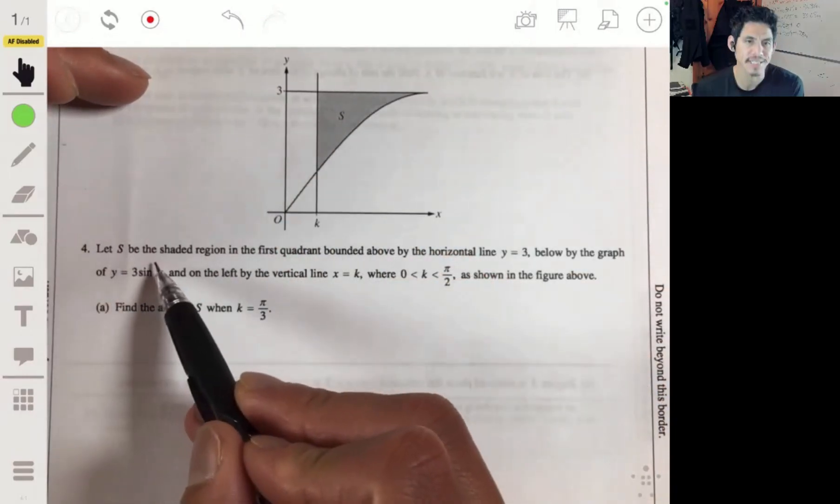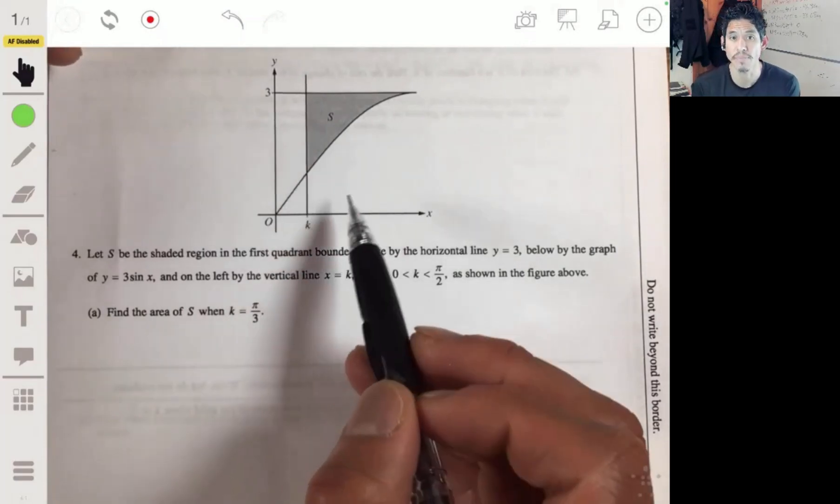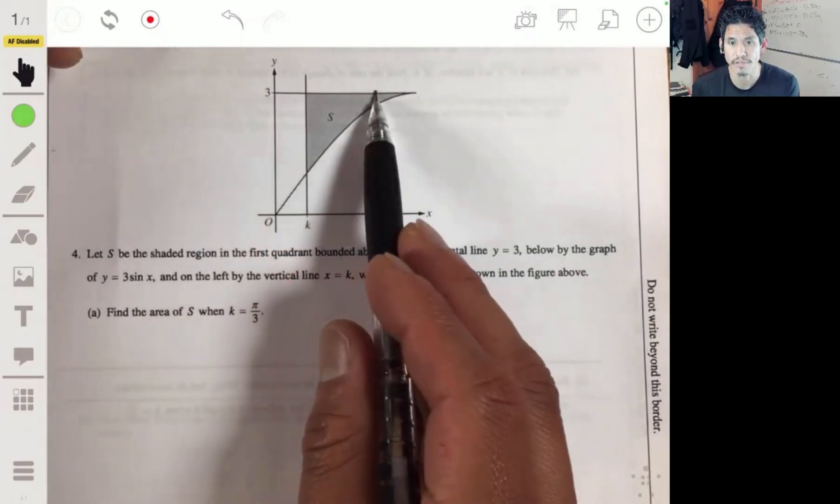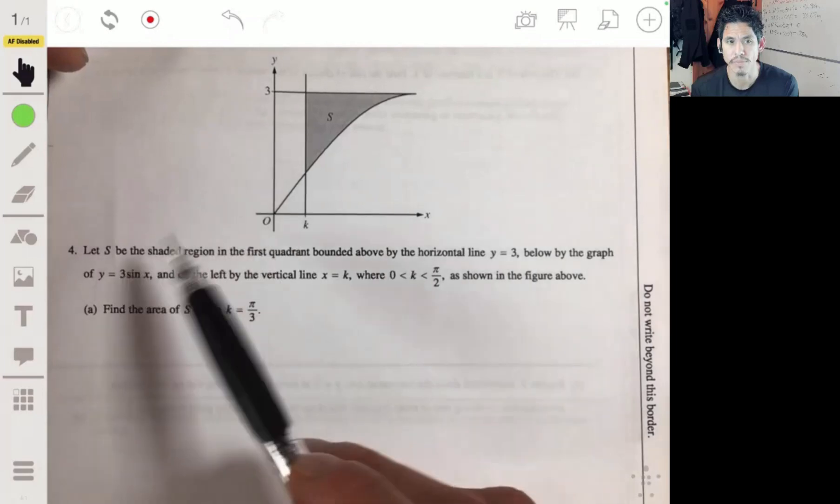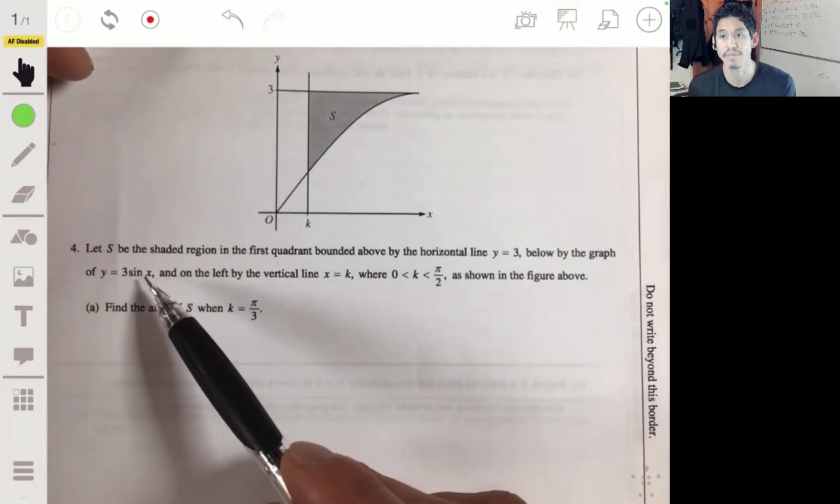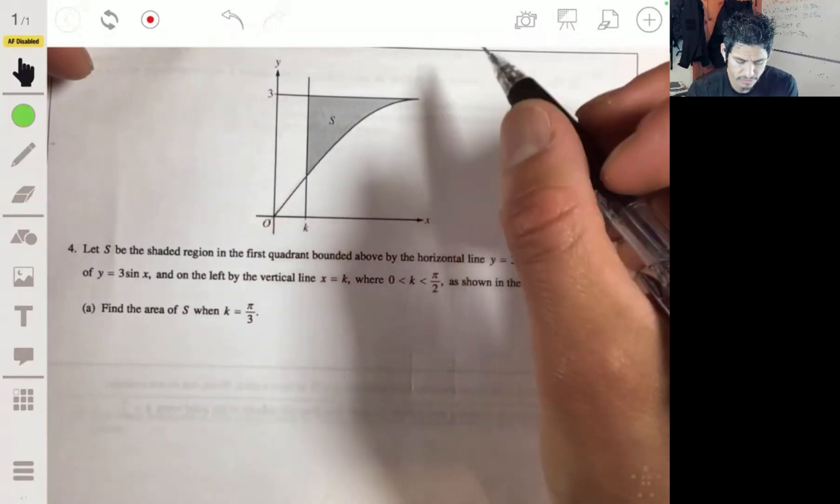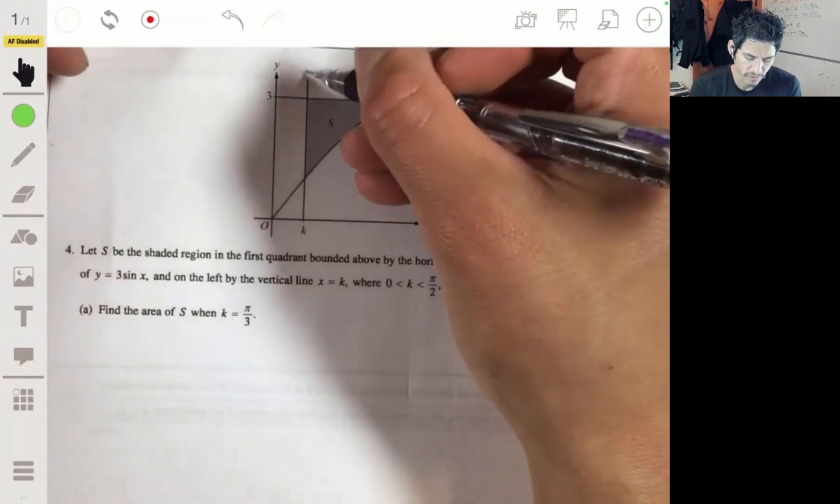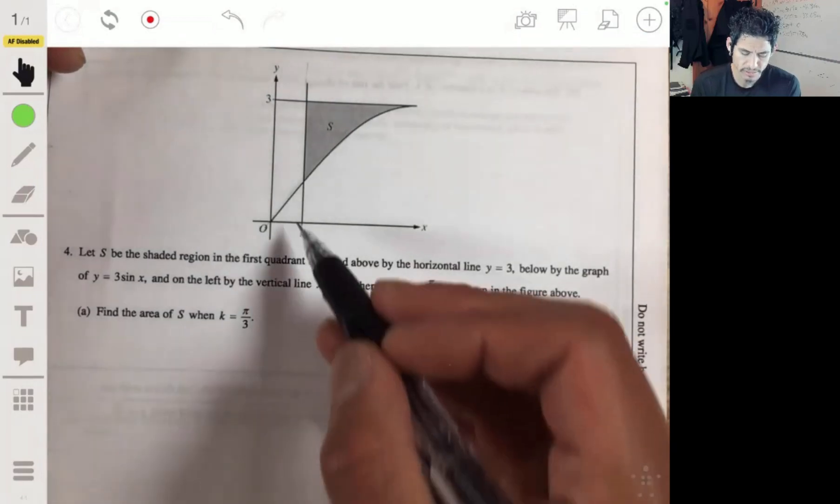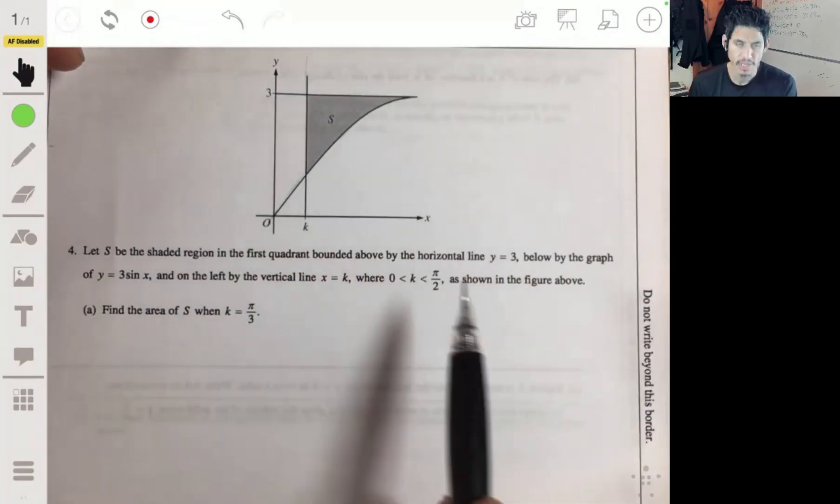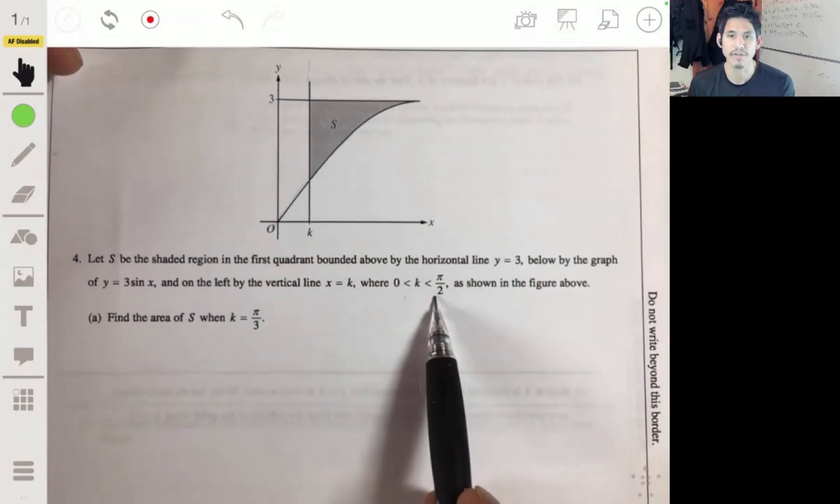S will be the shaded region in the first quadrant bounded above by the horizontal line y equals 3, and below by the graph of y equals 3 times the sine of x, and on the left by the vertical line x equals k.